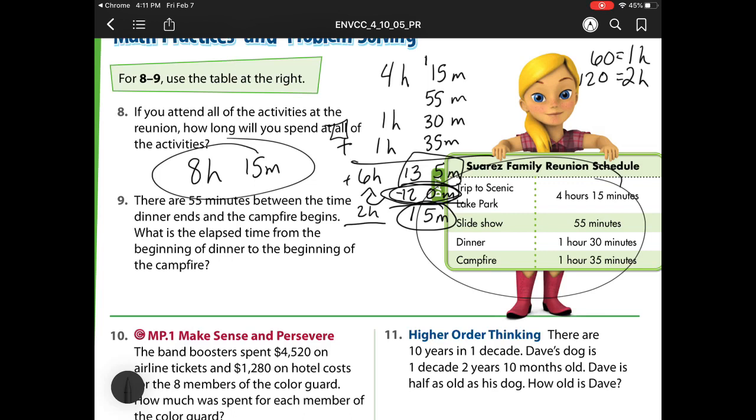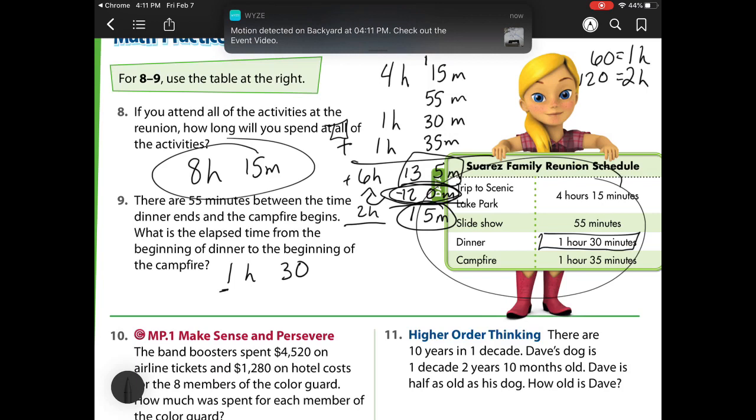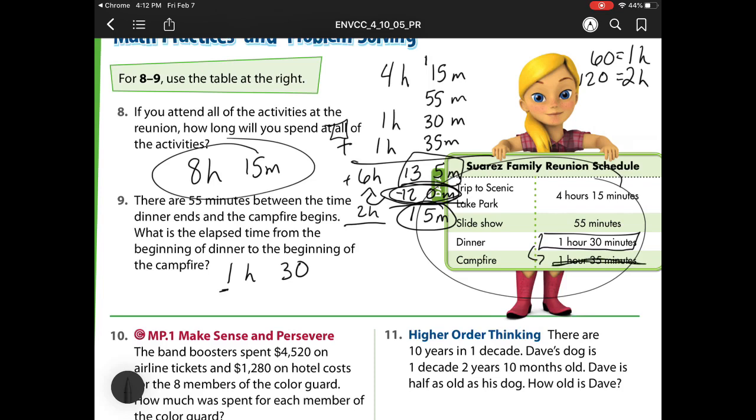For number 9, it says there are 55 minutes between the time dinner ends and the time campfire begins. What is the elapsed time from the beginning of dinner to the beginning of campfire? Dinner starts at an hour and 30 minutes. So the beginning of dinner to the end is going to be 1 hour and 30 minutes. But now we have to get to that campfire part. We're not using this part actually, because that's how long campfire will take. So I have to add that 55 minutes up here, because that's like my waiting time. I'll have 85 minutes and 1 hour. So I need to take away my groups of 60. 85 minus 60 is 25 minutes. And I'm regrouping that 60 for 1 hour. So I have 1 hour plus my regrouped hour, which is 2 hours. So it will take 2 hours and 25 minutes.